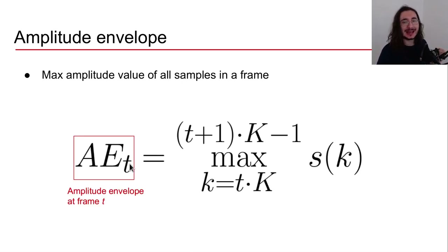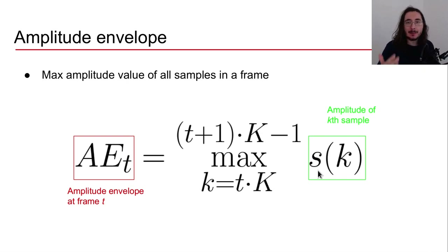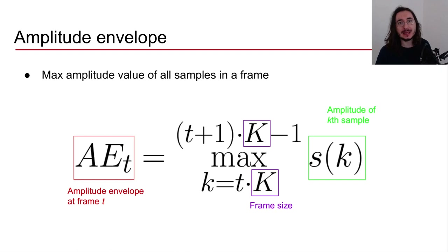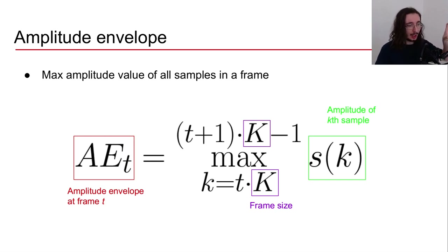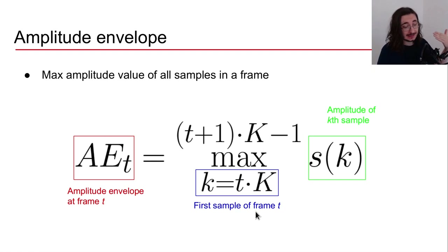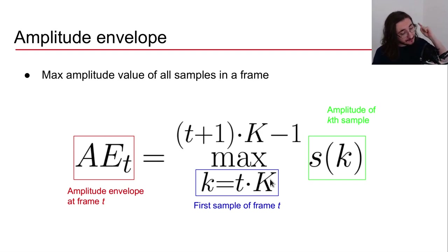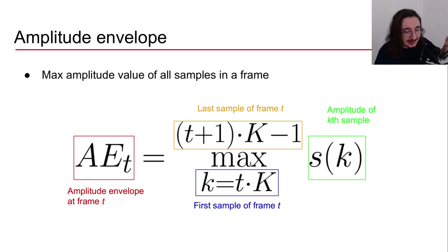What we want to find is the amplitude envelope at frame t. Here, s(k) is the amplitude at sample k, and capital K is the frame size — the number of samples in a given frame. We want to take the maximum amplitude value of all samples in frame t, so we define the max between the first sample of frame t, calculated as t times K, and the last sample of frame t.